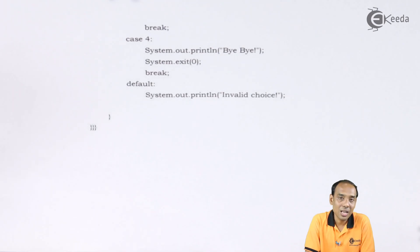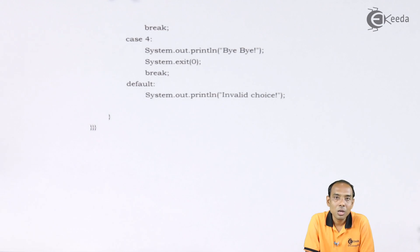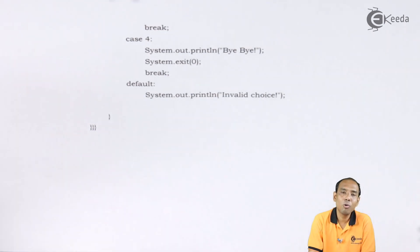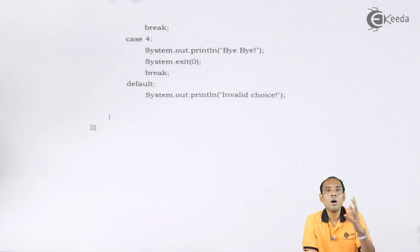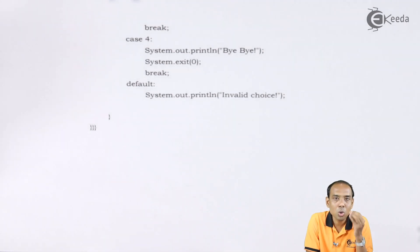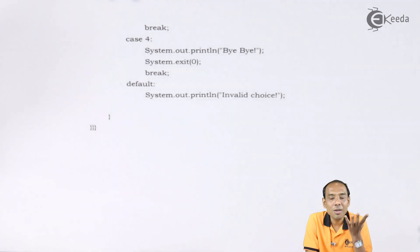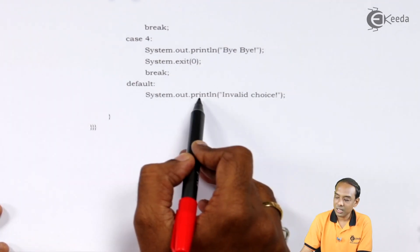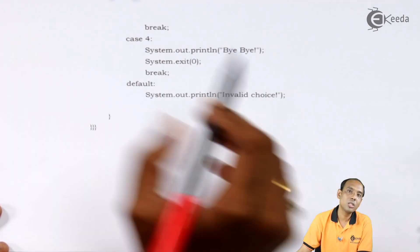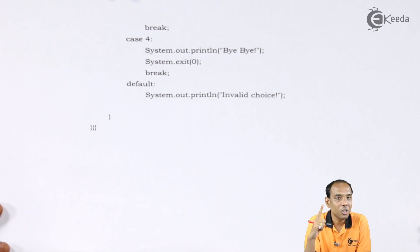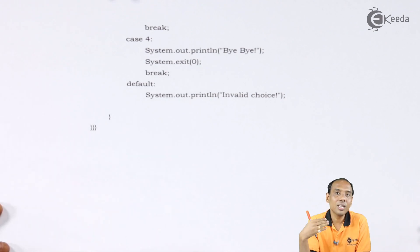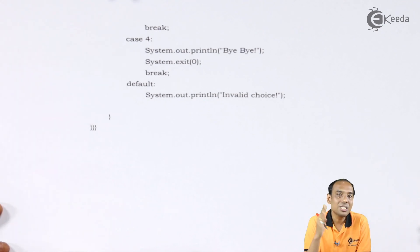Last is the default case. If the user doesn't enter one of the given case numbers and enters some other value — let's say number five — the case doesn't match anywhere. In that case I write the default condition where I write system dot println 'invalid choice', because the user only has choices from one for insertion, two for deletion, three for display, and four for exit. Other than these, if he enters anything else, the default case executes and he is told he has entered an invalid choice.